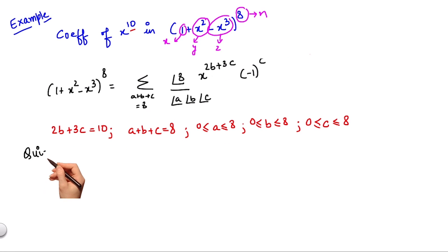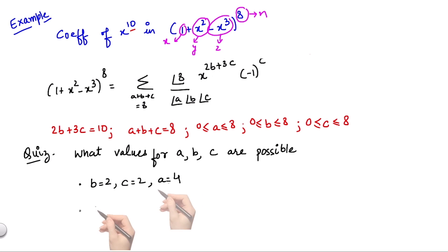Let's have a quiz. Given these conditions, what are the possible values of a, b, and c? Your options are: b=2, c=2, a=4; b=4, c=4, a=0; b=5, c=0, a=3; b=5, c=3, a=0.